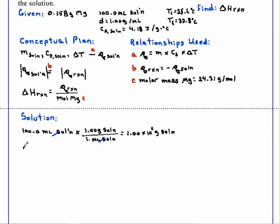We need a temperature change, which is our final temperature minus our initial temperature. That is 32.8 degrees C minus 25.6 degrees C for a temperature change of 7.2 degrees C.